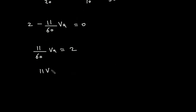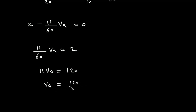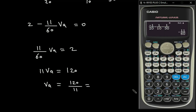Therefore, (11/60)VA equals 2, which gives 11·VA equals 2 times 60, that is 120. So VA is equal to 120 divided by 11, which equals 10.90 volts.